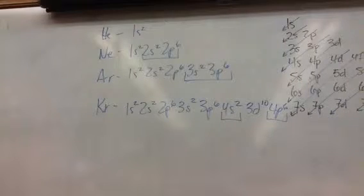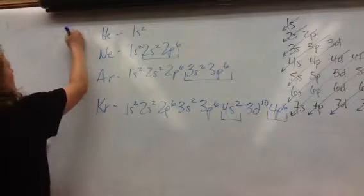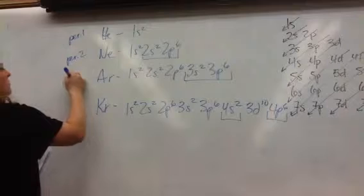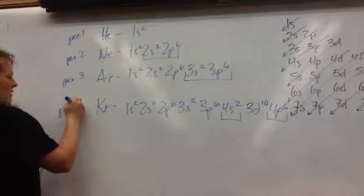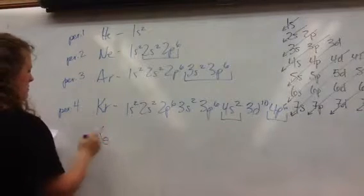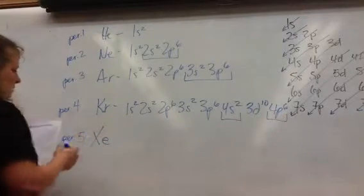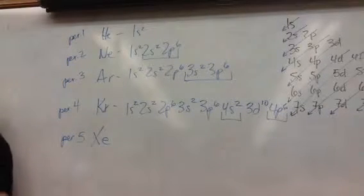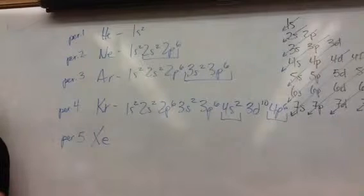Looking at these, this is in period 1, period 2, period 3, period 4. If you were a betting person, would you care to make a wager about what subshell xenon ends with? 5P. Does that make noble gas notation a nice shortcut? It does.